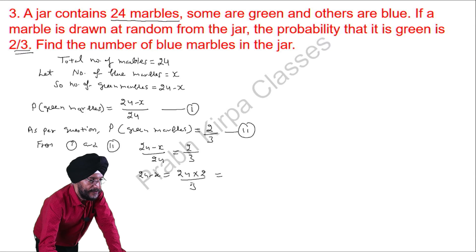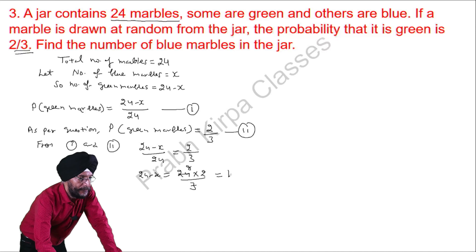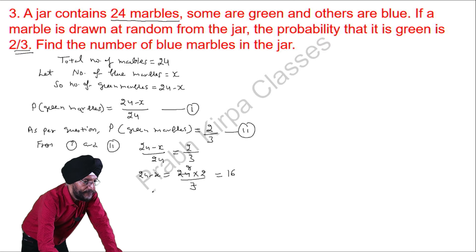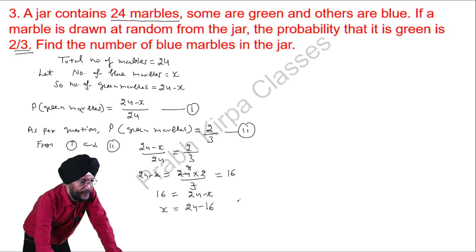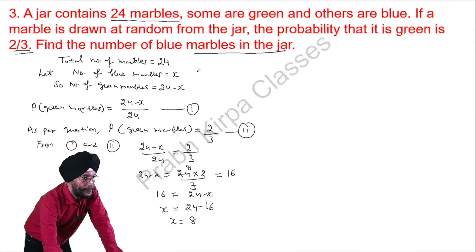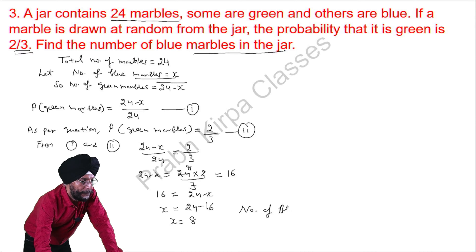So we can write 16 equals 24 minus x. Moving x to the left-hand side and 16 to the other side, we get x equals 8. That is the number of blue marbles, which we had assumed as x. So, the number of blue marbles equals 8.